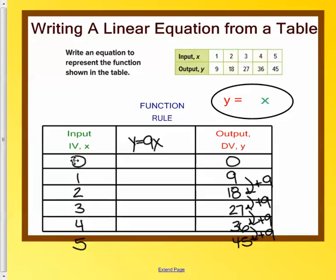Because every time I input one of these, it spits out an additional 9. And repeated addition is the same thing as multiplication. So originally, we just said the function rule is 9x. Now we say y equals 9x.